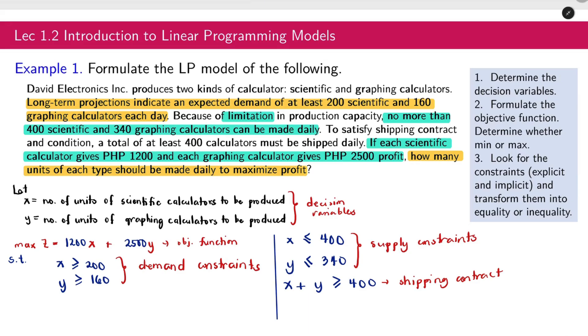These are what we consider in finding the number of units to be produced. And last but not the least, never ever forget: x is greater than or equal to 0 and y is greater than or equal to 0. This is the non-negativity constraint. If you don't include the non-negativity constraint, it will be considered wrong.